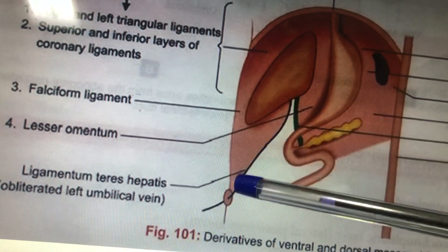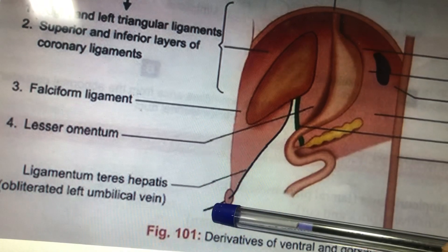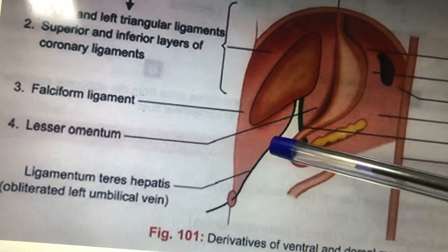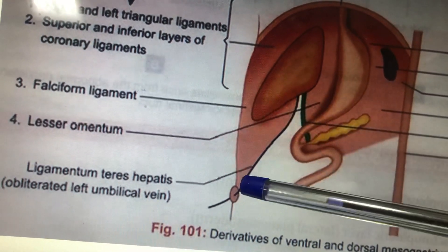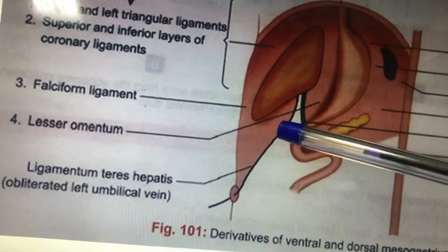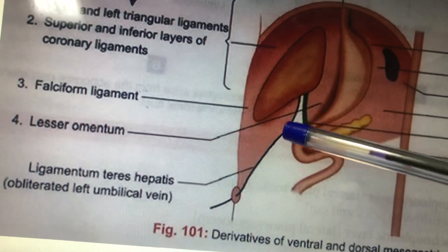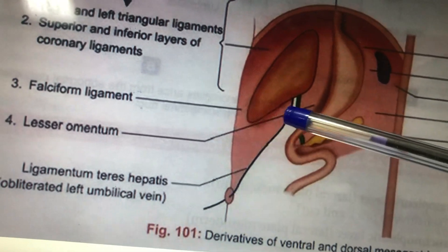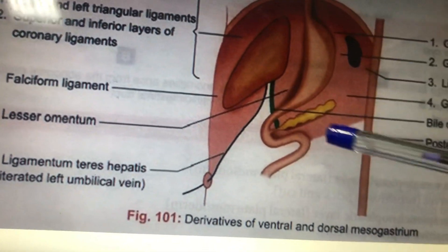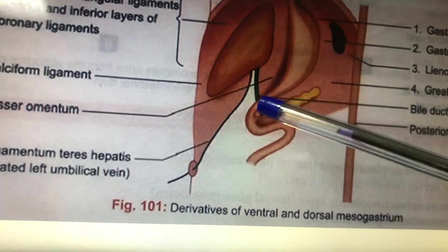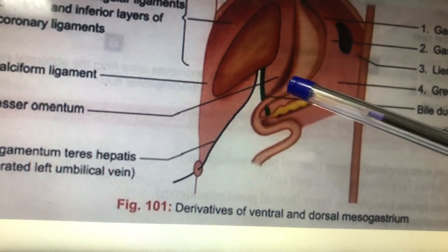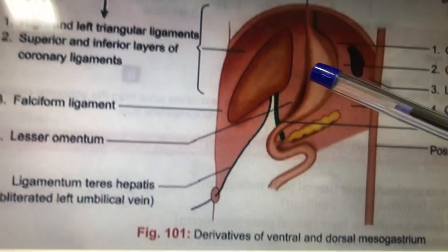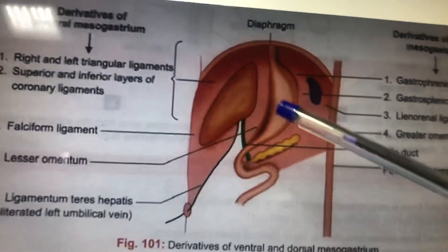From the inferior part of the falciform ligament there is a fold coming out — that is the obliterated left umbilical vein, called the ligamentum teres hepatis. Then the stomach begins its rotation.